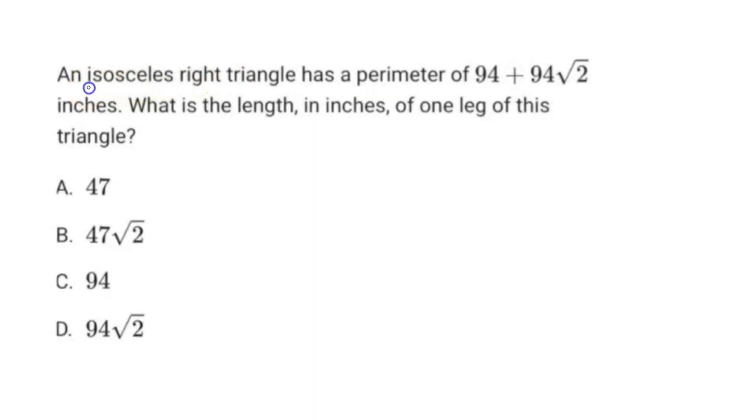An isosceles right triangle has a perimeter of 94 + 94√2 inches. What is the length in inches of one leg of this triangle? So let's draw a triangle out here. This is an isosceles triangle.